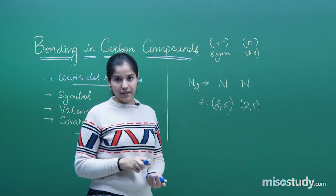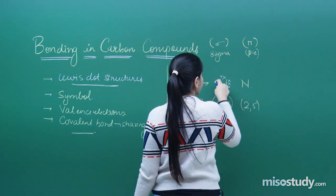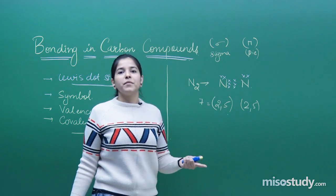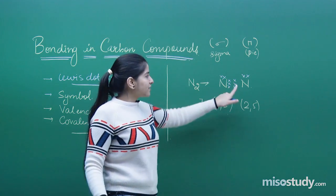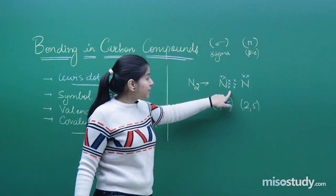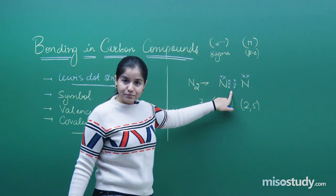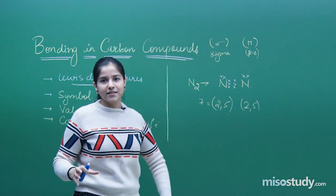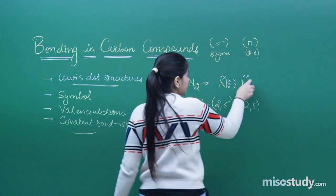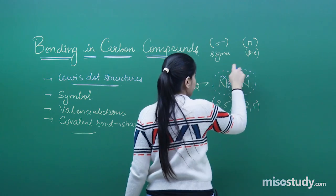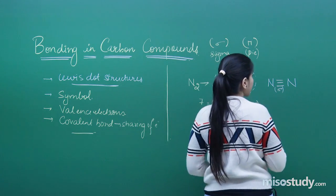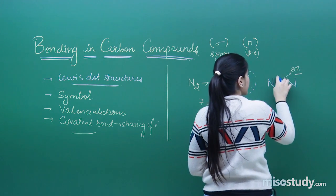Five electrons are valence electrons in each nitrogen. Since it has five, it needs three more. Gaining three would be difficult, so it shares three instead. Each nitrogen donates three electrons to the other — equal sharing, 50-50. That gives three bonds total. One is always sigma, and the rest are pi. So here there are one sigma bond and two pi bonds.